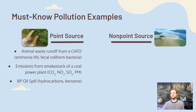Finally, we have oil spills as a point source example. The BP oil spill released hydrocarbons in the petroleum as well as benzene into the ocean over a huge area around where the spill occurred. Although it spread over a long distance, it's a point source example because we know exactly where it came from.